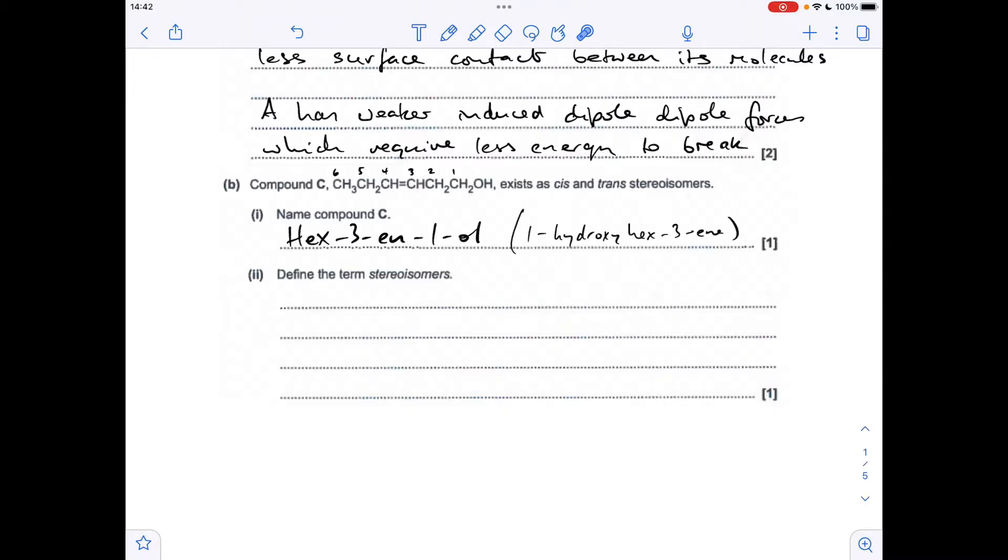Now, because functional group priority isn't tested at A-level, you don't have to give this name. You could name it where the alkene part has the main priority, and therefore the OH group would be classed as a hydroxy group. So in that case, the name would be 1-hydroxy-hex-3-en.